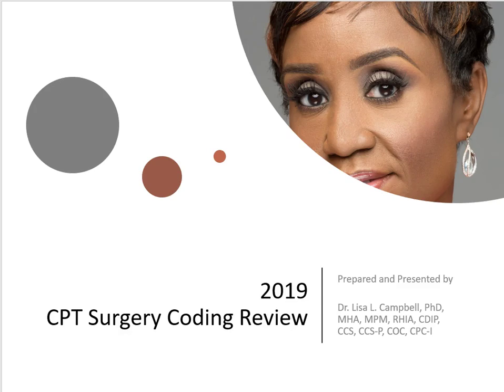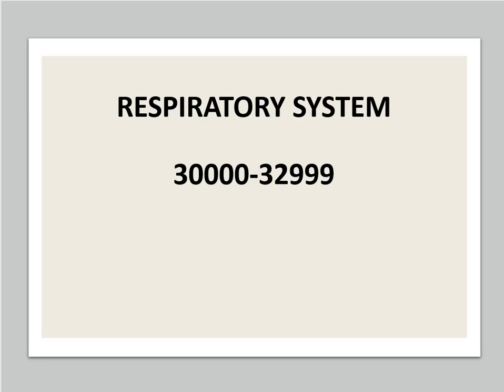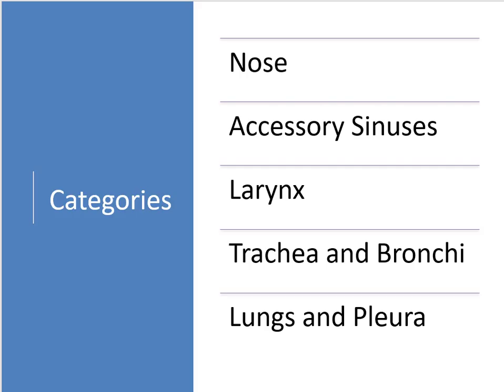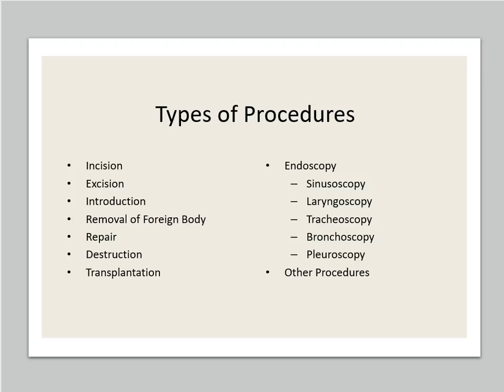Hi everyone, it's Dr. Campbell. We're back with another CPT coding surgery review session and today we're going to take a look at the first part of the 30,000 series. The 30,000 series is huge so I'm going to be separating it into a couple of parts. Today we're going to look at page 185 where the respiratory system begins, codes 30000 through 32999. On page 185, you'll want to note that the body parts for this system are in red and the types of procedures are listed in blue.